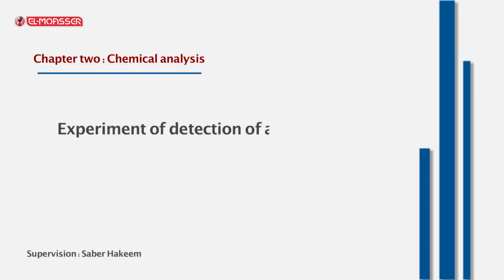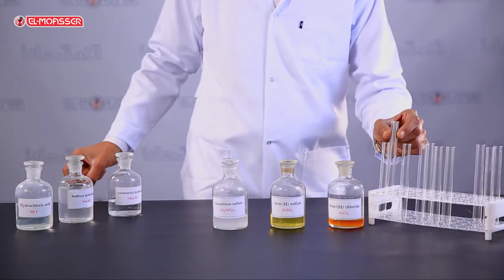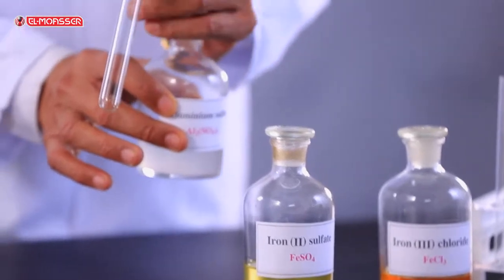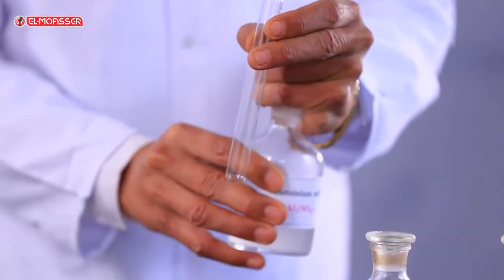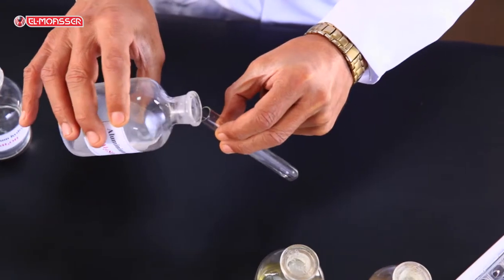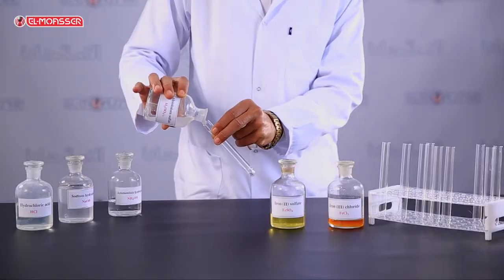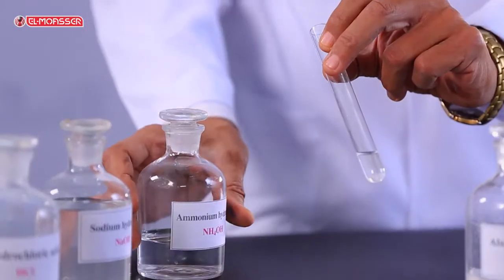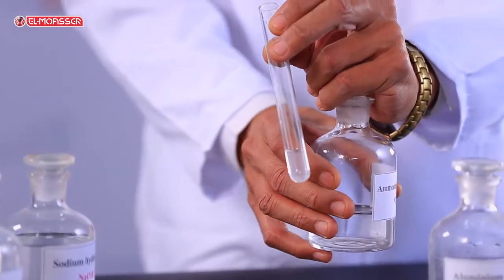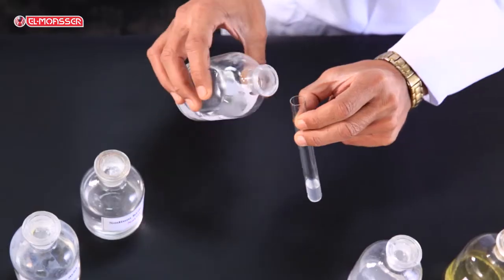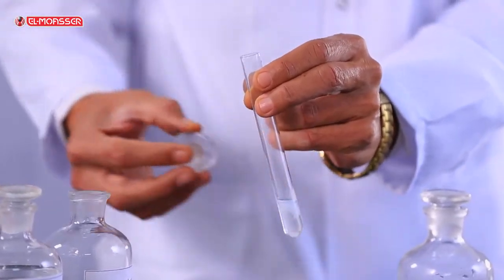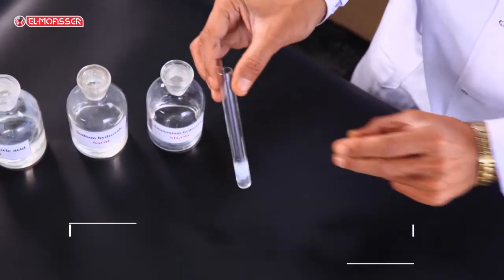The detection of aluminum cation is performed using aluminum sulfate solution. In the main experiment, add a small amount of ammonium hydroxide solution to aluminum sulfate solution. A white gelatinous precipitate of aluminum hydroxide is formed.